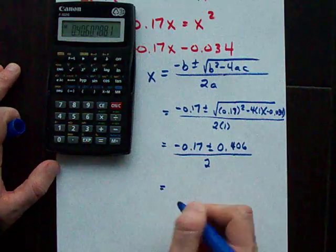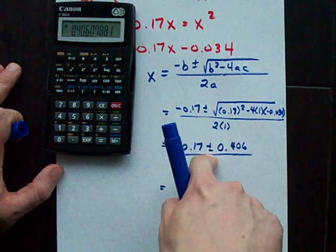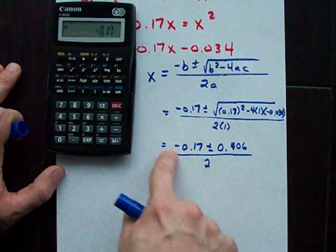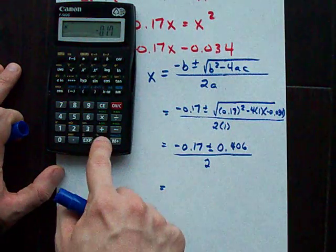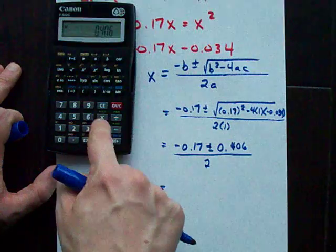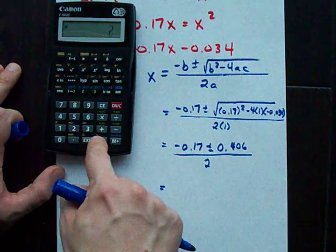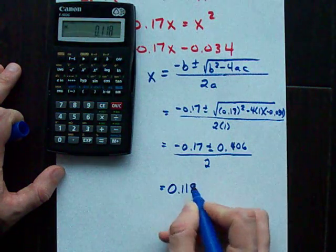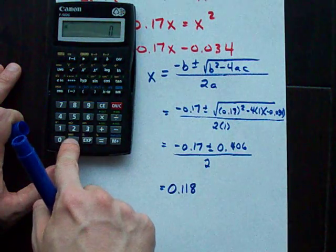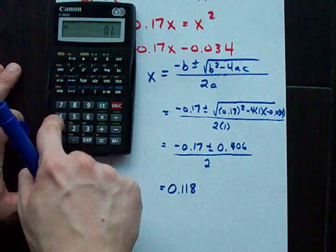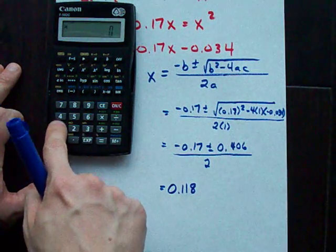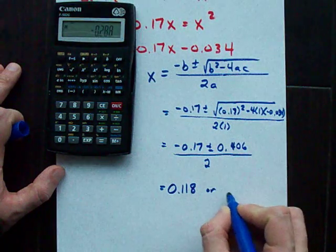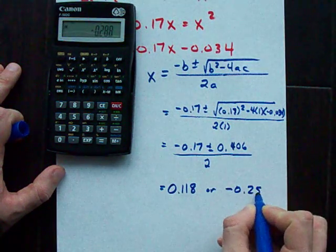So, this is going to give you two answers. I'll do plus, then minus. So, 0.17, negative 0.17, plus 0.406, divided by 2. If I use the plus, I get 0.118. If I use the minus, negative 0.17 minus 0.406 divided by 2, I get negative 0.288.